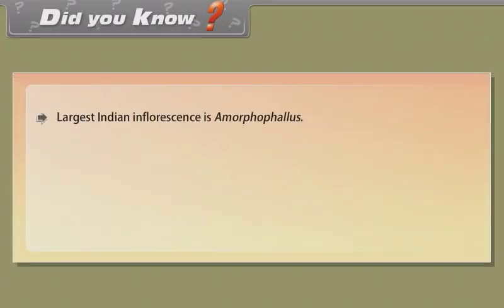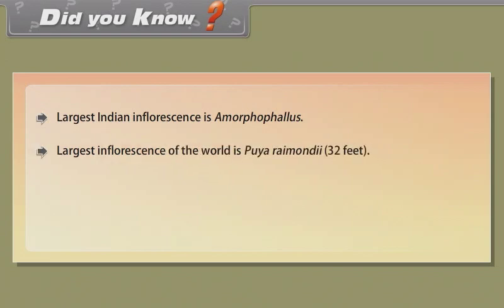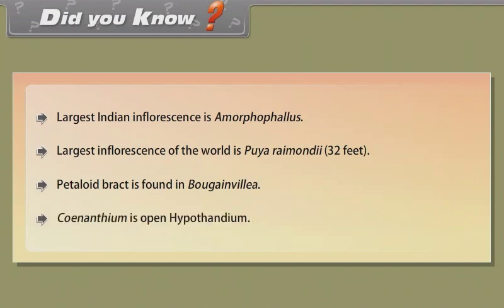Did you know? The largest Indian inflorescence is Amorphophallus. The largest inflorescence in the world is Puya raimondii at 32 feet. Petaloid bract is found in Bougainvillea. Synanthium is an open hypanthodium.